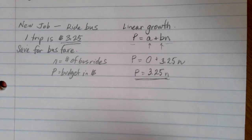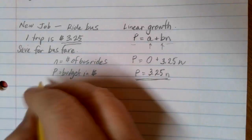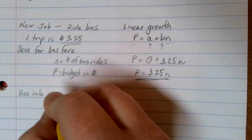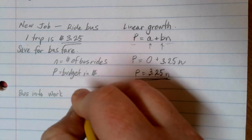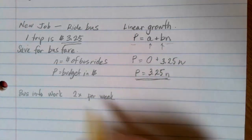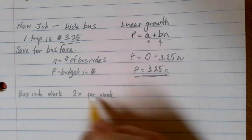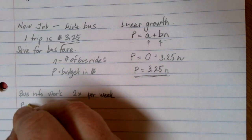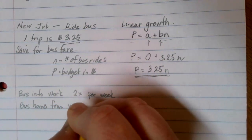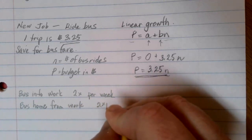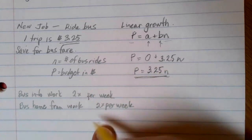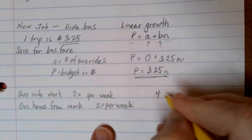Let's suppose that we decide that we need to take the bus into work two times every week. Well, if we bus into work, we also need to bus home from work. And that's going to be two times per week as well. We go to work, we want to come home. So altogether, we're going to be using four bus rides per week.